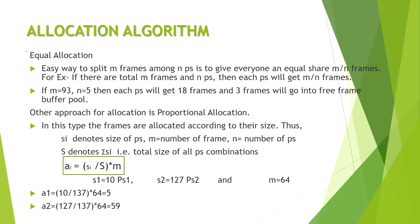There are two allocation algorithms: equal allocation and proportional allocation. In equal allocation, let's say there are 93 frames and 5 processes — these frames are equally distributed among all processes. Each process gets 18 frames, and the remaining 3 frames go to a free frame buffer pool.